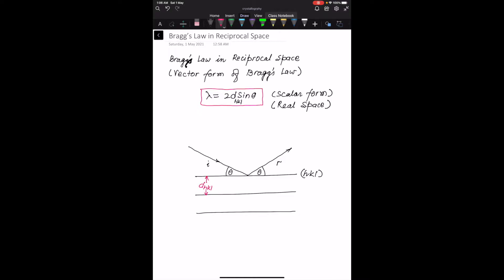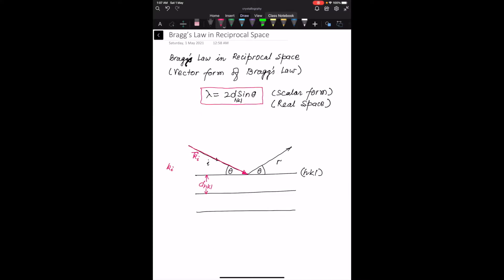To couch this law in the vector form or in the reciprocal space, all we need to do is introduce a vector, an incoming wave vector, let us call that Ki. The length of the wave vector is the reciprocal of the wavelength, 1 by lambda, and the direction is the direction of the incoming wave.